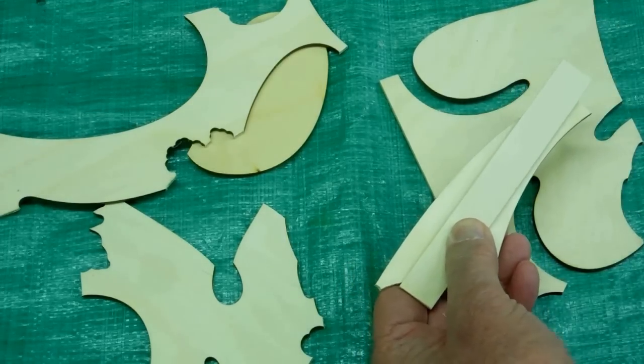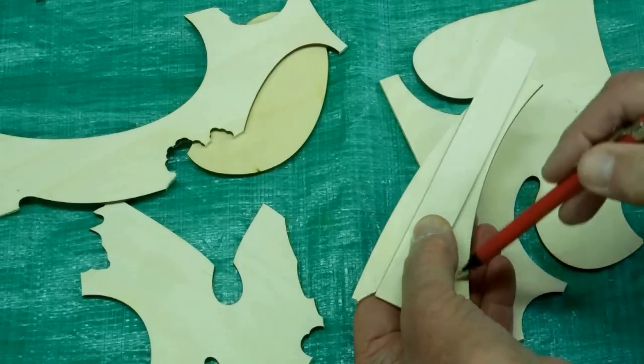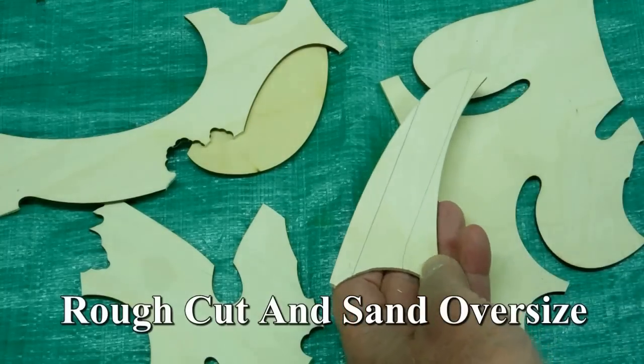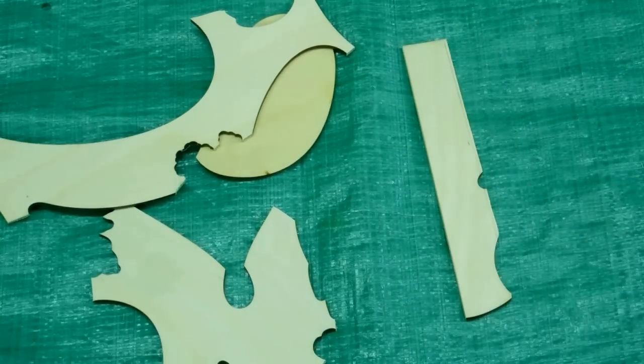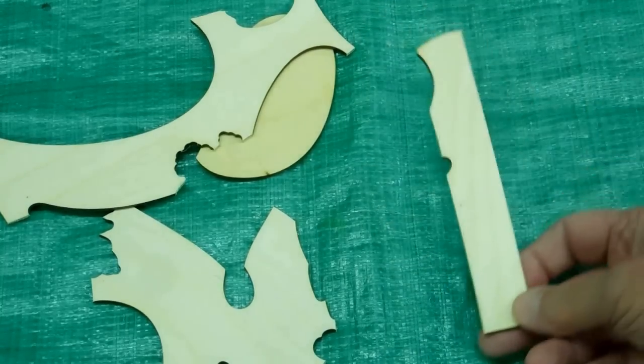You take a ¾ inch strip, mark it, cut and sand it. It'll look something like that. Then I'll run this through the table saw.